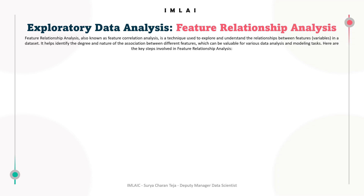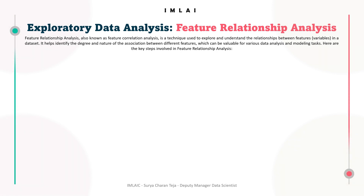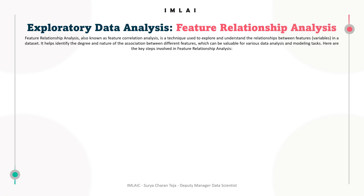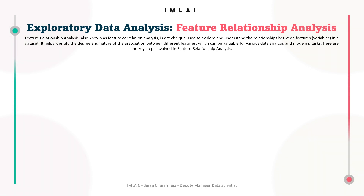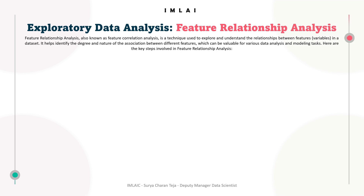Feature relationship analysis, also known as feature correlation analysis, is a technique used to explore and understand the relationships between features and variables in a dataset. It helps identify the degree and nature of the association between different features, which is valuable for various data analysis and modeling tasks.